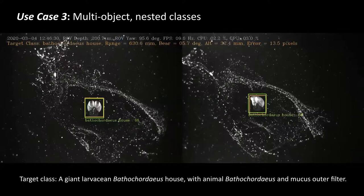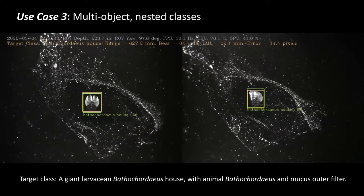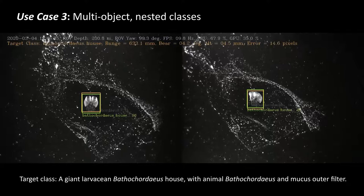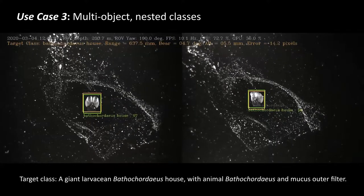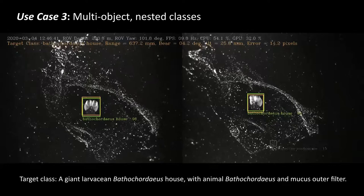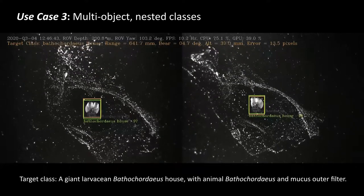For use case three, there are instances where you can have multi-object nested classes, like the giant larvacean Bathychordius that is found within its mucus house, which is also found within a mucus outer filter.